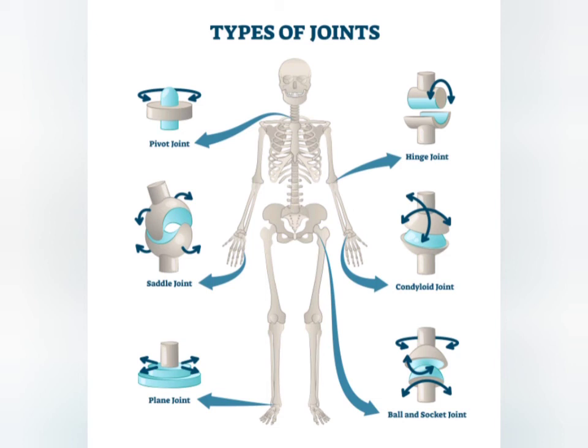In the saddle joint, the articulating bones fit together like a man sitting on a saddle. The most important saddle joint is at the base of the thumb, between the trapezium of the wrist and the first metacarpal bone. The range of movement is similar to that of a condyloid joint but with additional flexibility. Opposition of the thumb — the ability to touch each of the fingertips on the same hand — is due to the nature of the thumb joint.